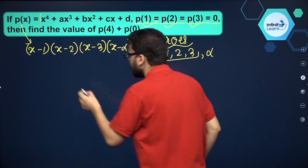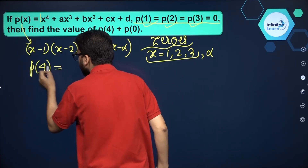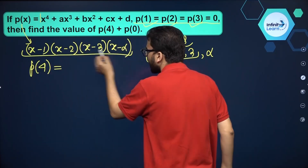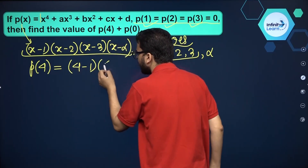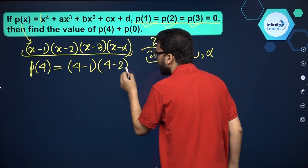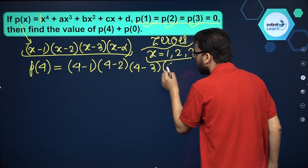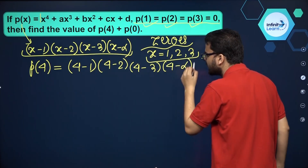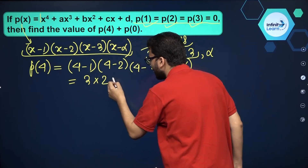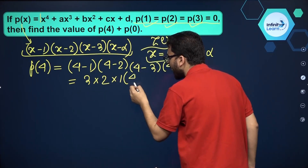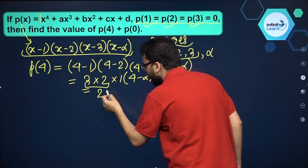Now we have to find p of 4. We put x equal to 4 in the polynomial: (4 minus 1)(4 minus 2)(4 minus 3)(4 minus alpha). Simplifying: 3 times 2 times 1 times (4 minus alpha). Opening the bracket gives us 6 times 4 minus 6 alpha, which is 24 minus 6 alpha. So p of 4 equals 24 minus 6 alpha.